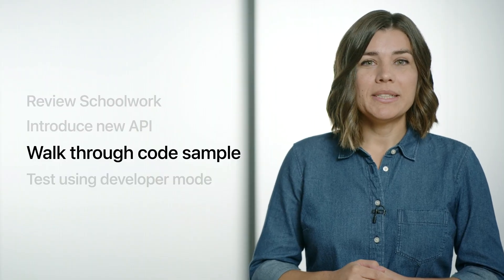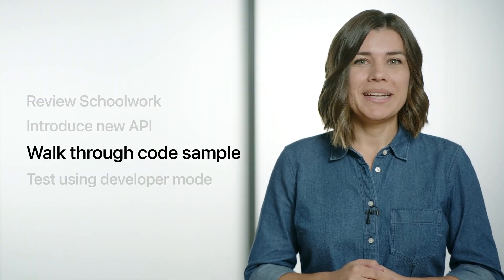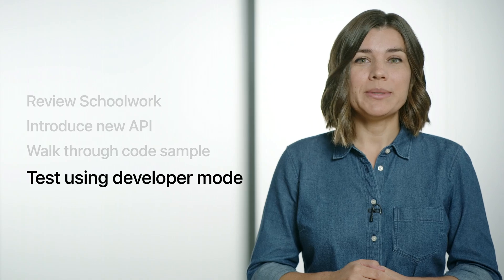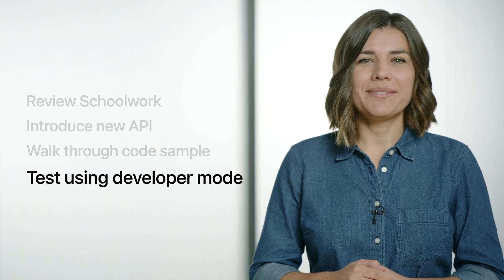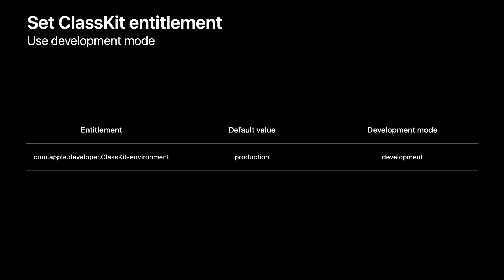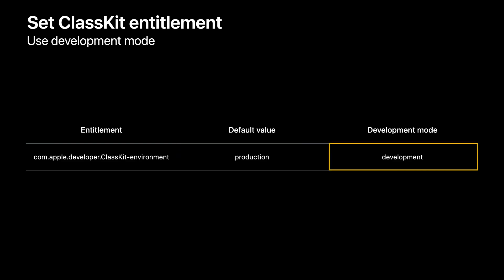Now that we've adopted the API into our sample app, let's see how we can test our implementation using Schoolwork and developer mode. First, we need to set the ClassKit environment entitlement to development — this is inside of Xcode. The default value is production. We'll change the value of the entitlement to development so that we can test using developer mode and Schoolwork. The next time we run our code, it will run in developer mode. It's important to make sure to set this back to production after you're done testing.